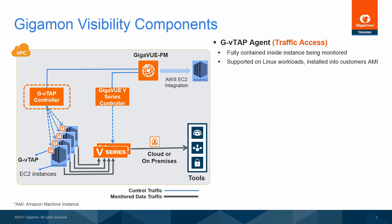Otherwise, the agent can be installed as a Linux package on an existing workload. This video does not show the installation of the GVTAP agent, but the configuration procedure is shown in the Gigamon Visibility Platform for AWS Configuration Guide.